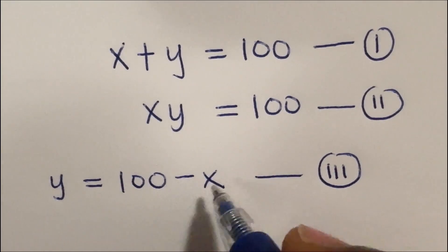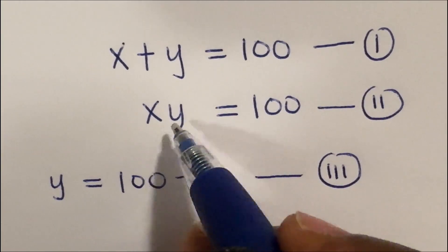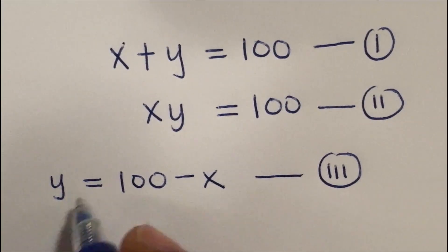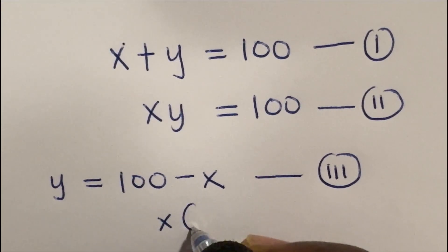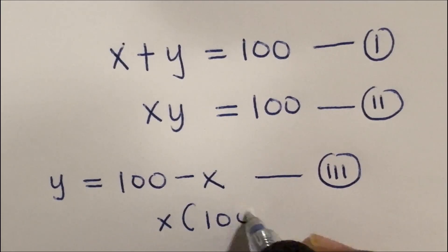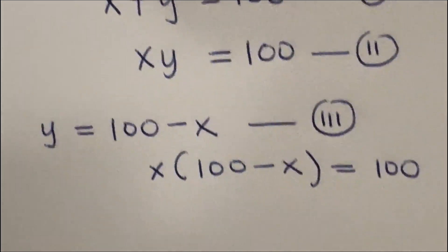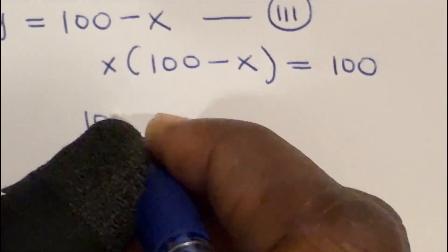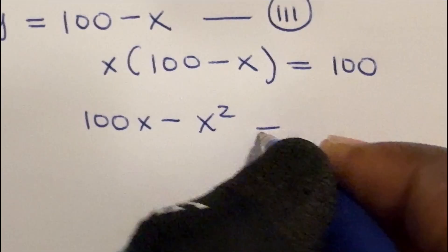So y is 100 minus x. I'm going to go into equation 2 and substitute for y, which is 100 minus x, meaning x into (100 minus x) is equal to 100. I'm going to expand this bracket: this is 100x minus x squared is equal to 100.